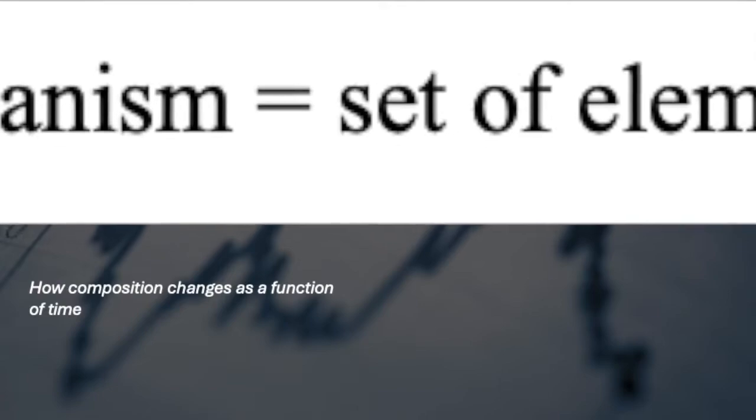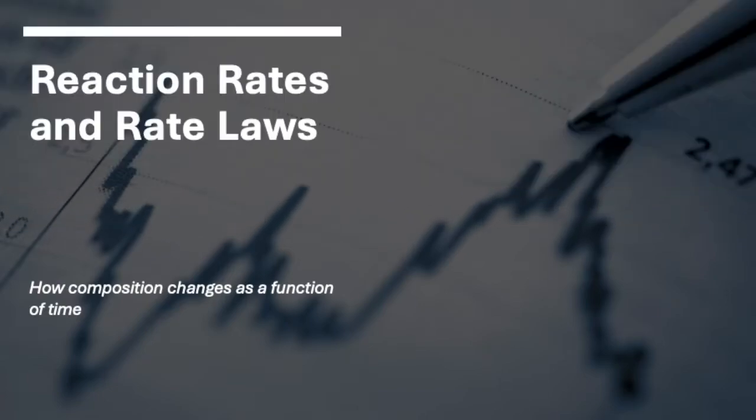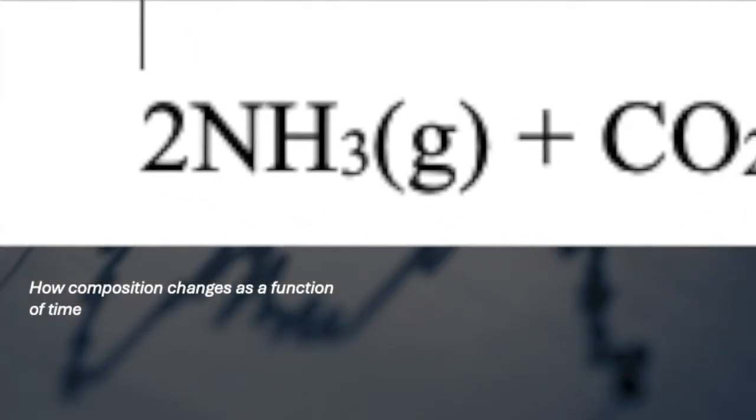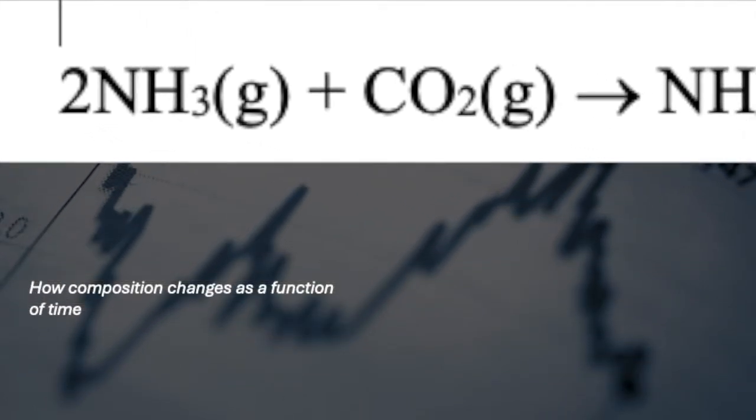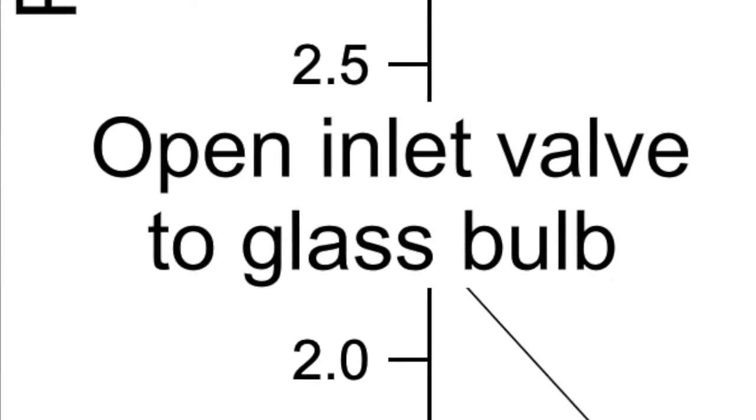A reaction mechanism is a set of elementary steps. For instance, we can measure the pressure as a function of time. Let's take as an example the reaction of ammonia plus carbon dioxide to make ammonium carbamate. We open a valve to introduce these two gases into an evacuated glass bulb.